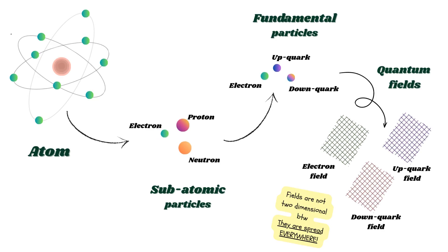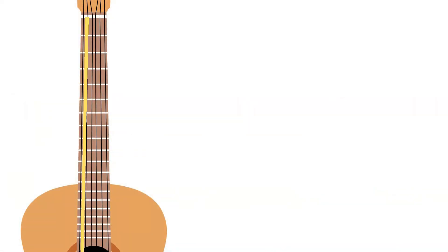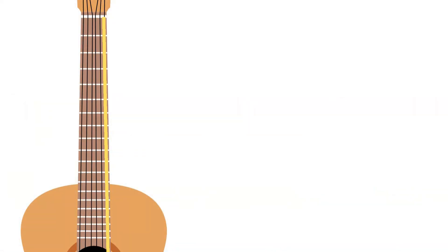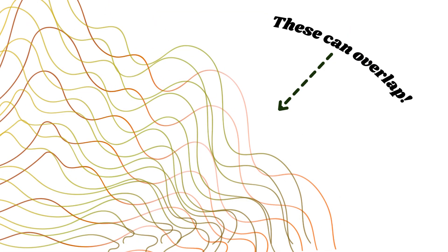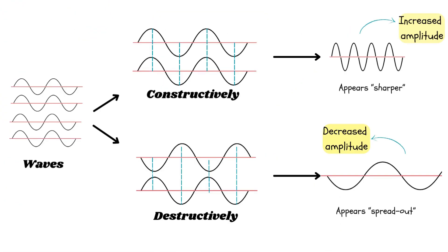Basically, at the quantum level, fields are spread throughout the entire universe. Each field is composed of many waves, similar to how a guitar can have many strings which are capable of producing many waves. These waves can overlap, resulting in a sharper or more spread out wave.